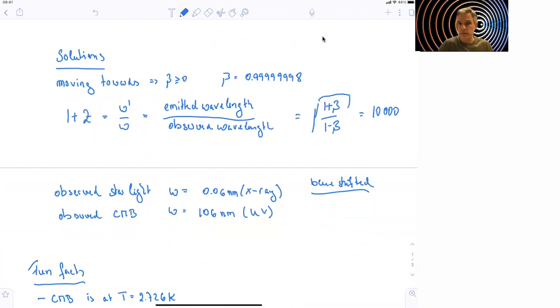So we just have to divide our emitted wavelengths by 10,000 and find that the observed starlight has a wavelength of 0.06 nanometers, which is x-ray. So she's going to be flooded by x-ray as light's coming from the stars.